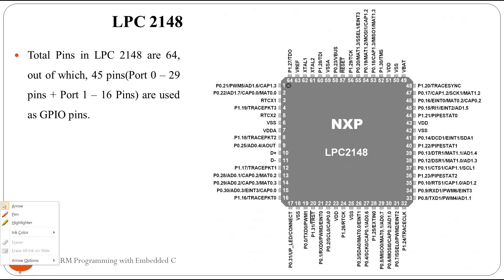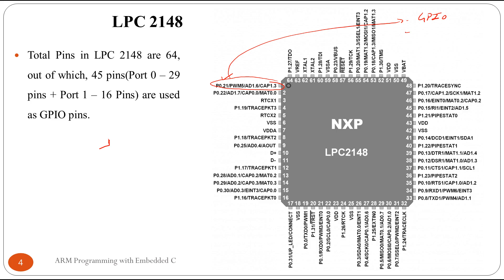One important feature of the LPC 2148 microcontroller is that one pin can have a minimum of one functionality and a maximum of four functionalities. For example, pin number one — which is p0.21 — can be configured as a GPIO pin, a PWM pin, an analog-to-digital converter pin, or a capture pin. So this pin has four functionalities, but at a time it can work on only one.